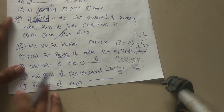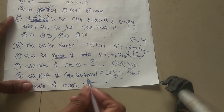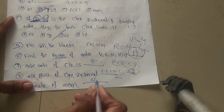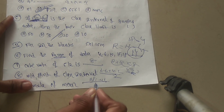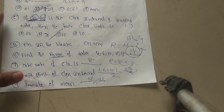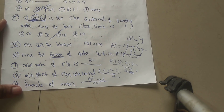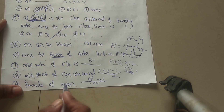Question 9: formula of the mean. The formula for mean is: sigma of f_i times x_i, divided by n.